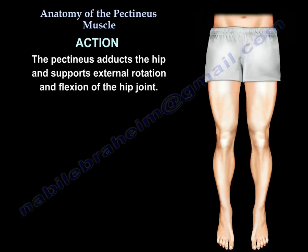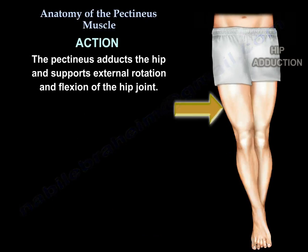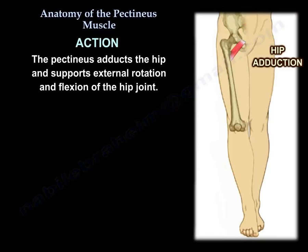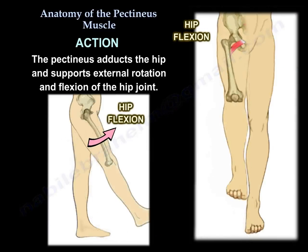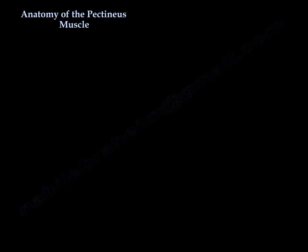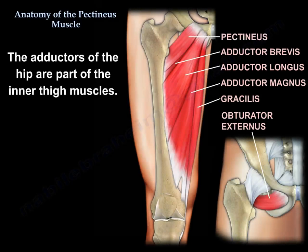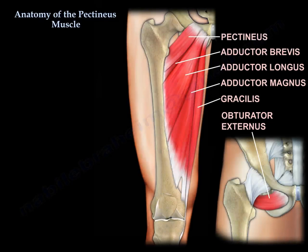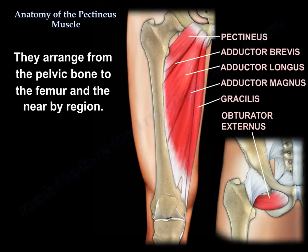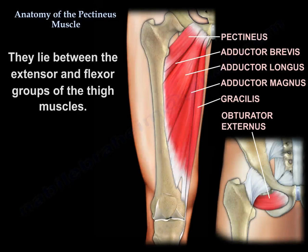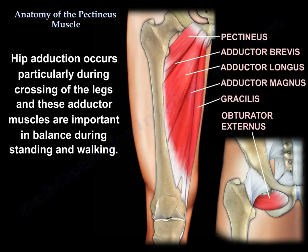Action: the pectineus adducts the hip and supports extended rotation and flexion of the hip joint. The adductors of the hip are part of the inner thigh muscles. They range from the pelvic bone to the femur and the nearby region. They lie between the extensor and flexor groups of the thigh muscles. Hip adduction occurs particularly during crossing of the legs, and these adductor muscles are important in balance during standing and walking.